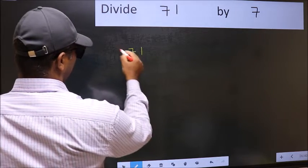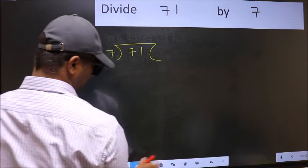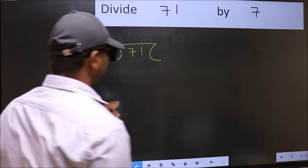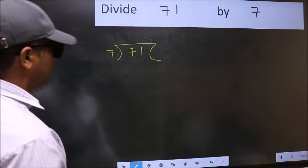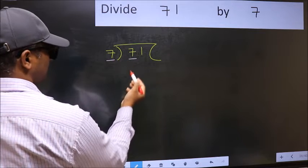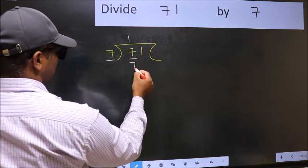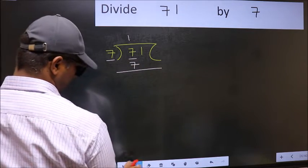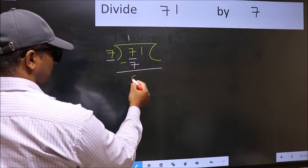71 and 7 here. This is your step 1. Next, here we have 7, and here also 7. When do we get 7 in 7 table? 7 once 7. Now you should subtract. 7 minus 7, 0.